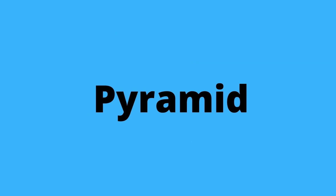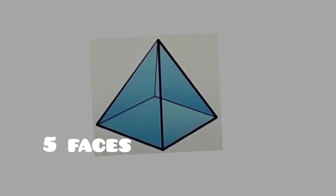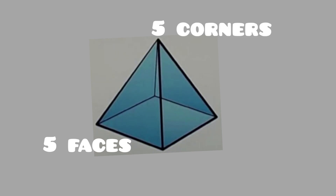This is a pyramid. It has four triangular faces — one, two, three, four — and the fifth one is the square base, so it is called a square base pyramid. It has five corners: one, two, three, four, and five.